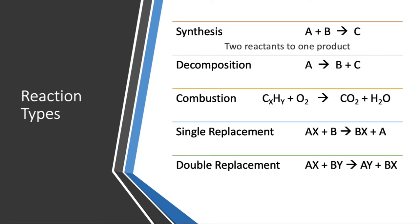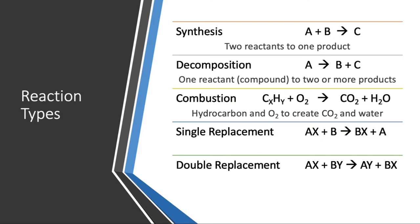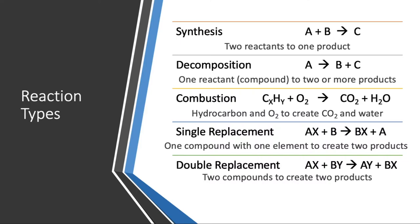In a synthesis reaction you always have two reactants that produce one product — you're putting two things together to make one thing. In decomposition reactions you only have one reactant and you'll make two or more products. Combustion is going to be a hydrocarbon and oxygen, making carbon dioxide and water. Single replacements are one compound with one element to create two products where an ion has switched places. In double replacement you have two compounds at the beginning and two compounds at the end, and they have switched ion partners.